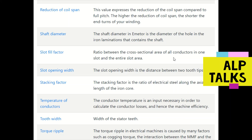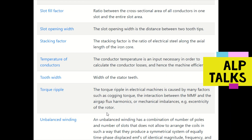Stacking factor is the ratio of electrical steel along the length of iron to the total length of the iron core. Temperature of conductors is an input necessary to calculate conductor losses and machine efficiency — it refers to the temperature at which the conductors are currently operating. Tooth width is the width of the stator teeth.